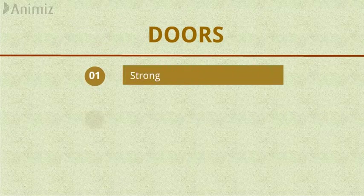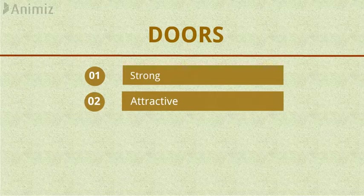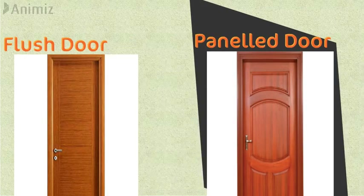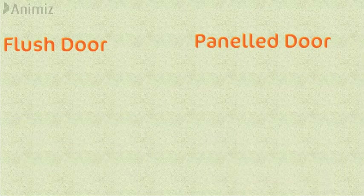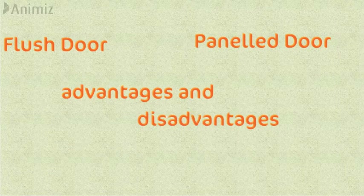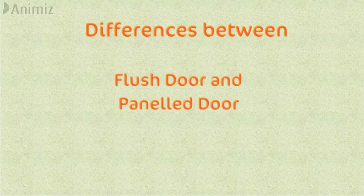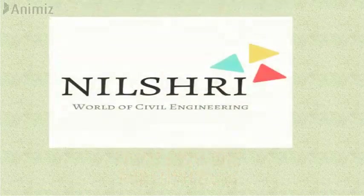Doors are an important component of a modern house, so they should be strong, attractive and budget friendly. Basically, two types of doors come in the market — flush door and panel door. Both types of doors have their own set of advantages and disadvantages. In this video, we will see the differences between flush door and panel door, so without further delay, let's get started.